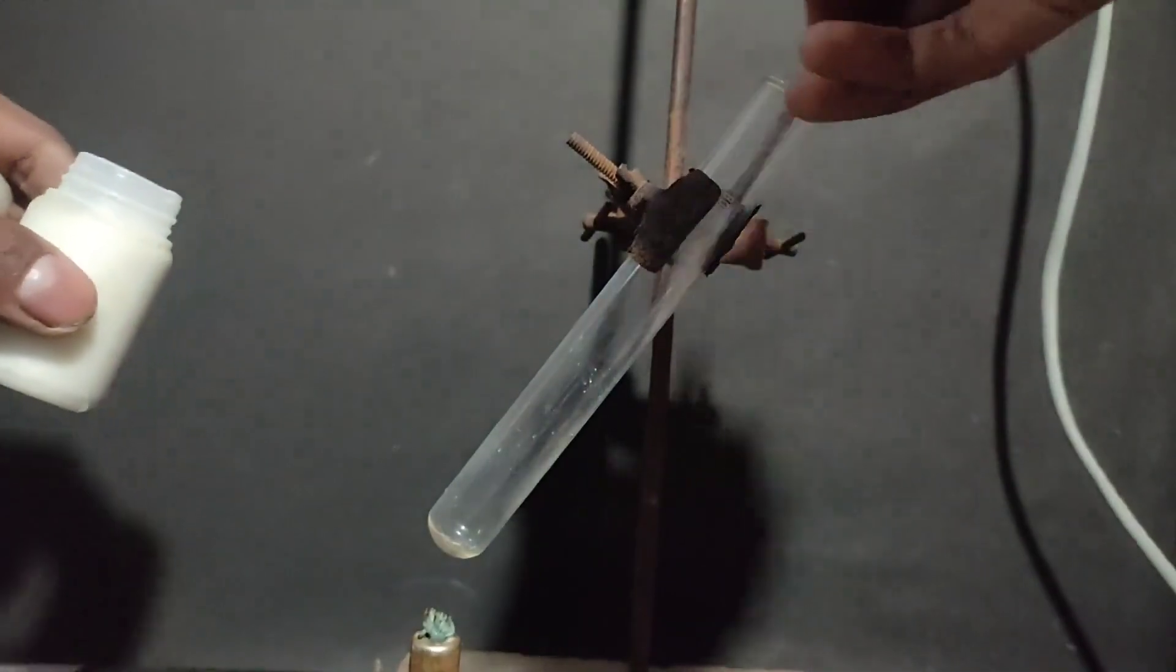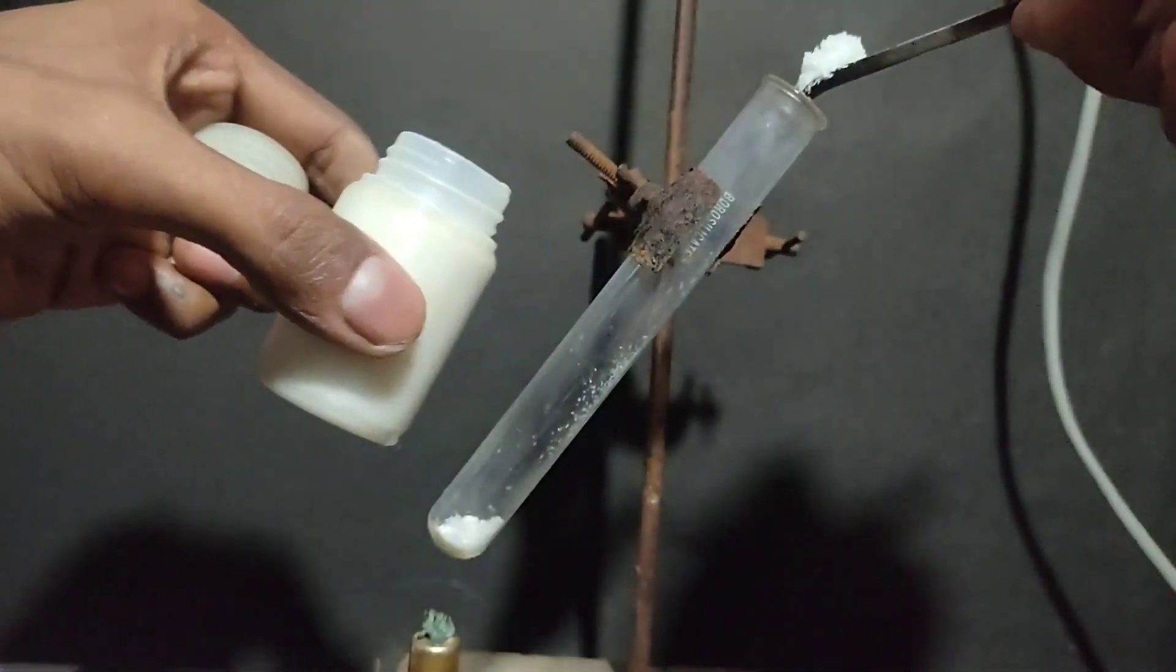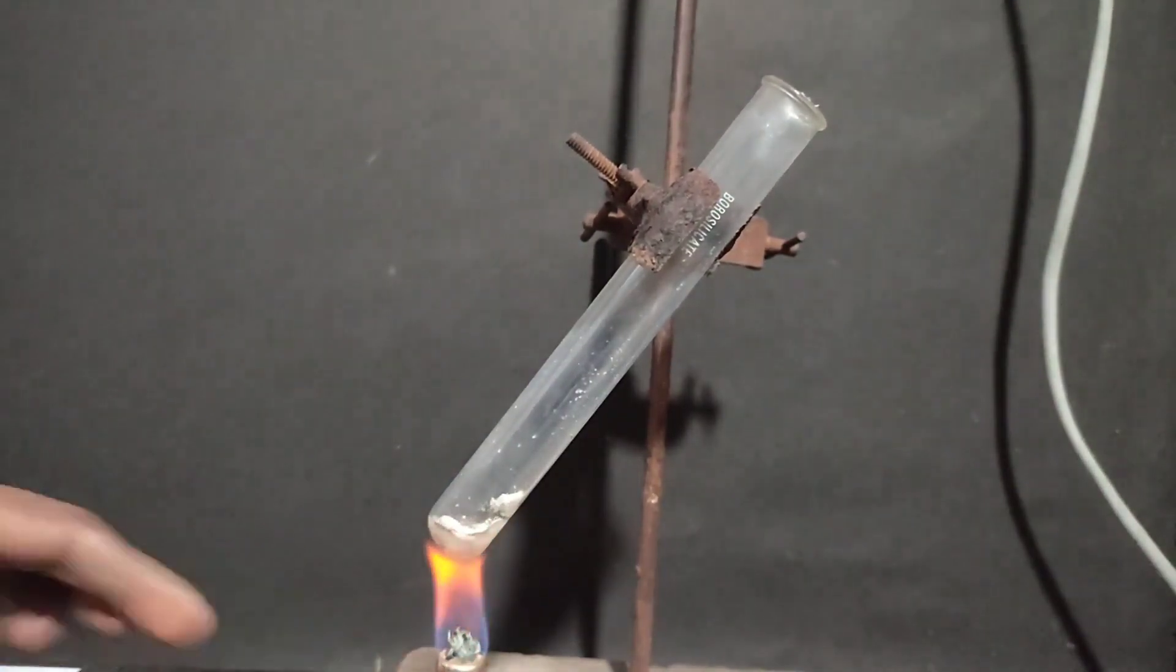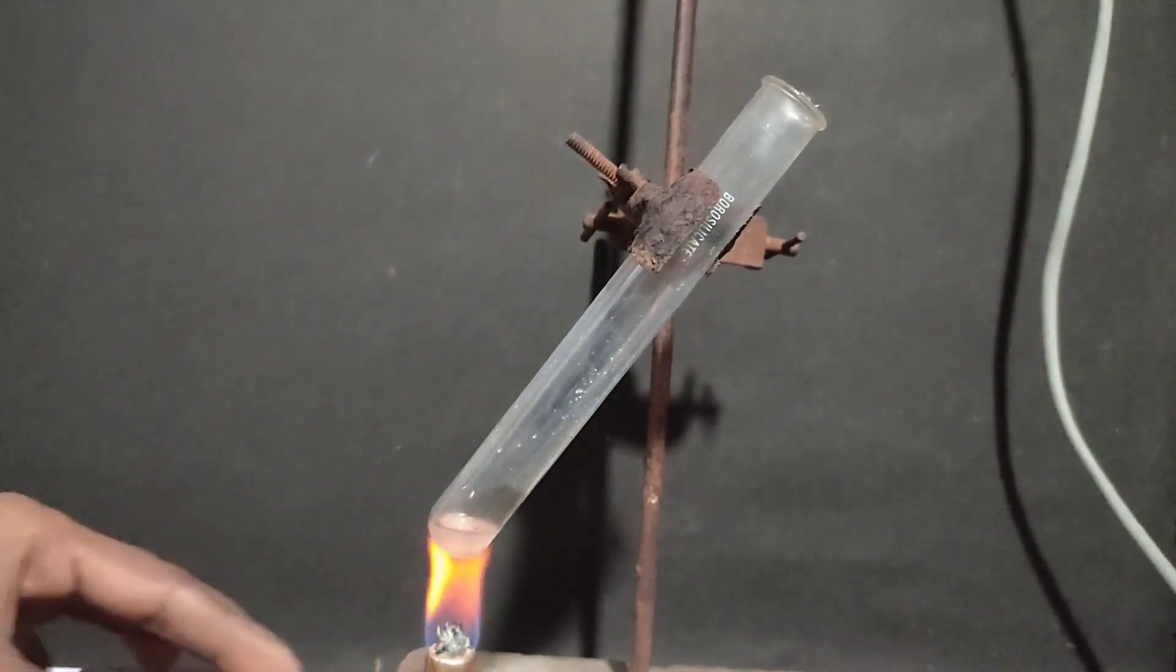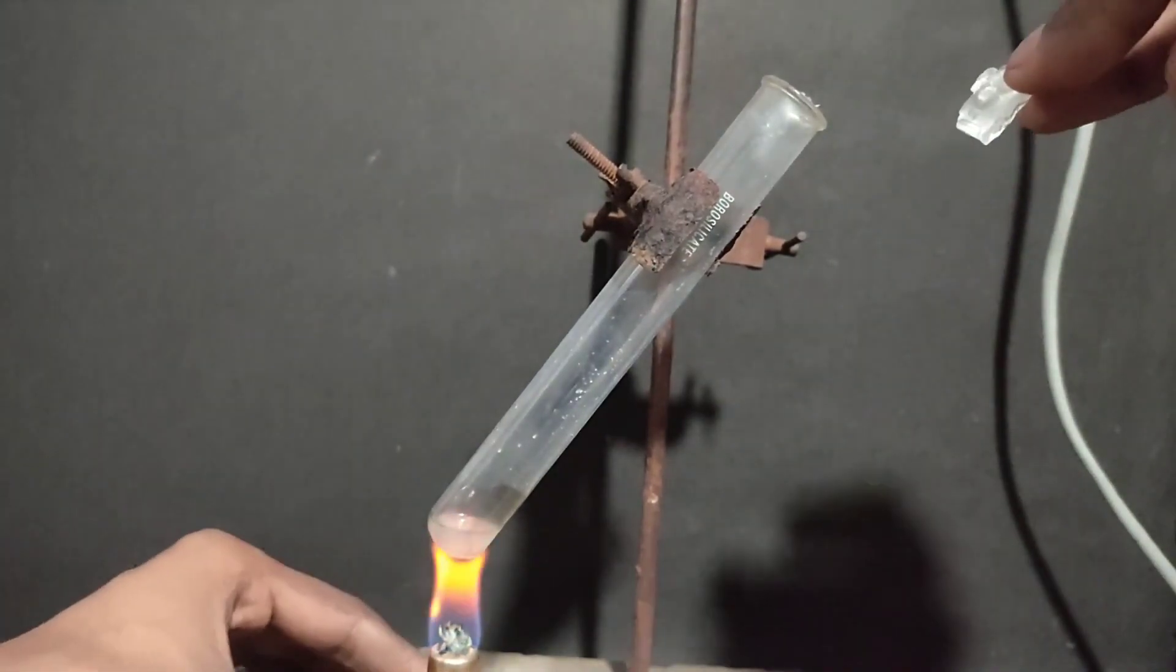Now to test my potassium chlorate I took some of it in a test tube and heated it until all the potassium chlorate started to melt. When all the potassium chlorate melted, I took a sugar cube, also called Mishri, and threw it in the test tube. And you can see the classical gummy bear experiment.